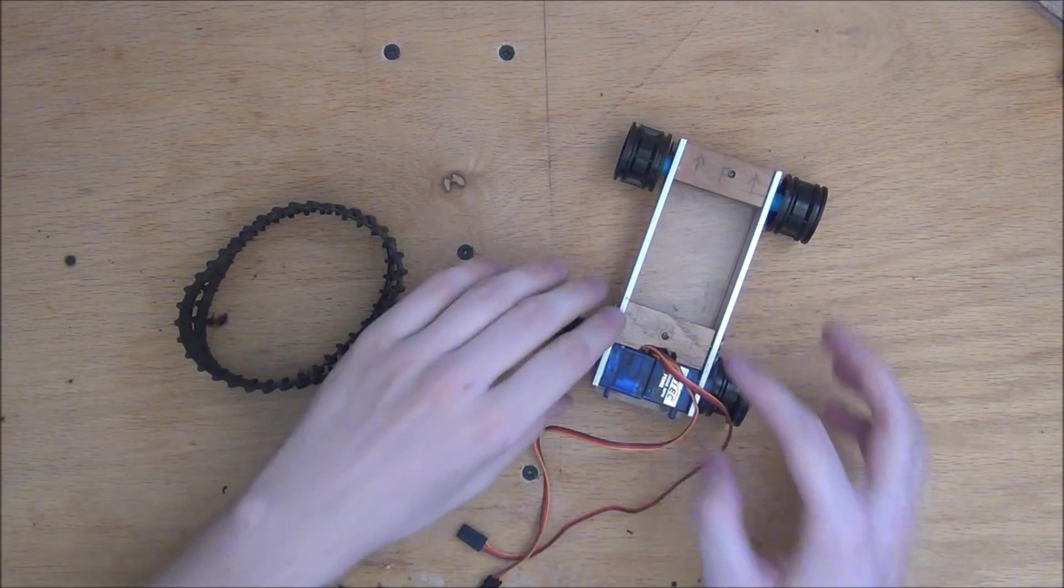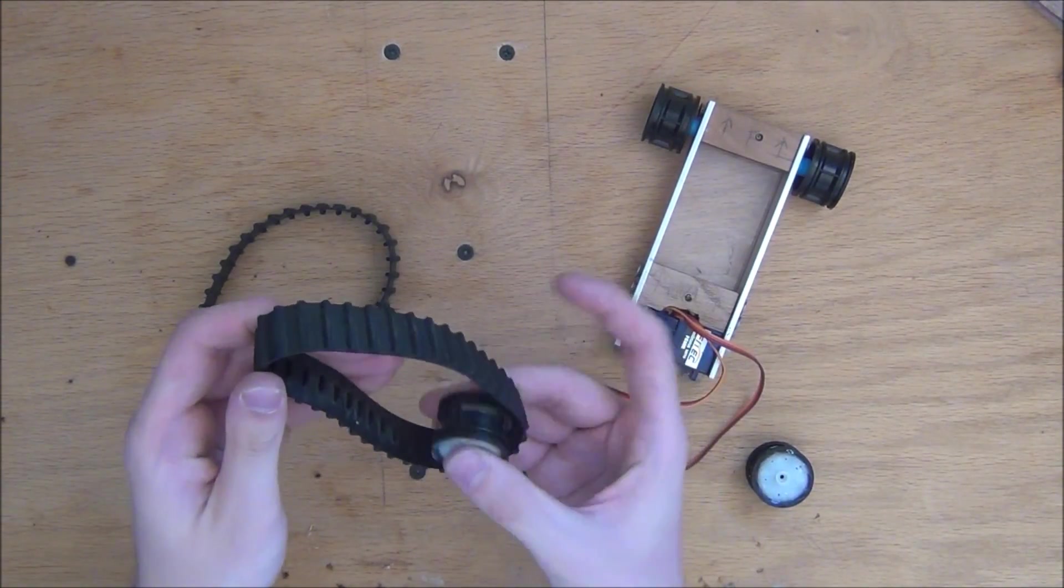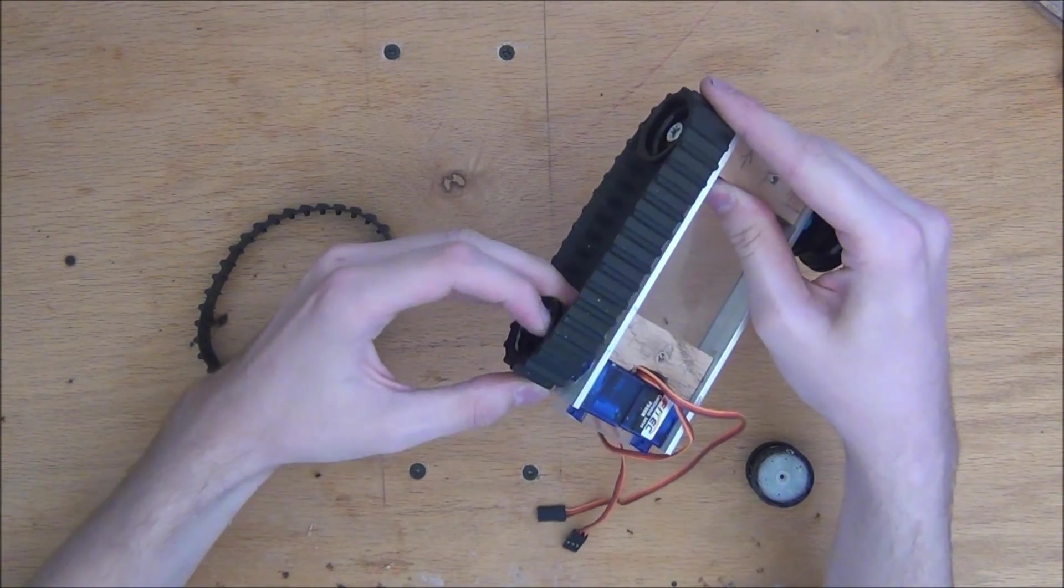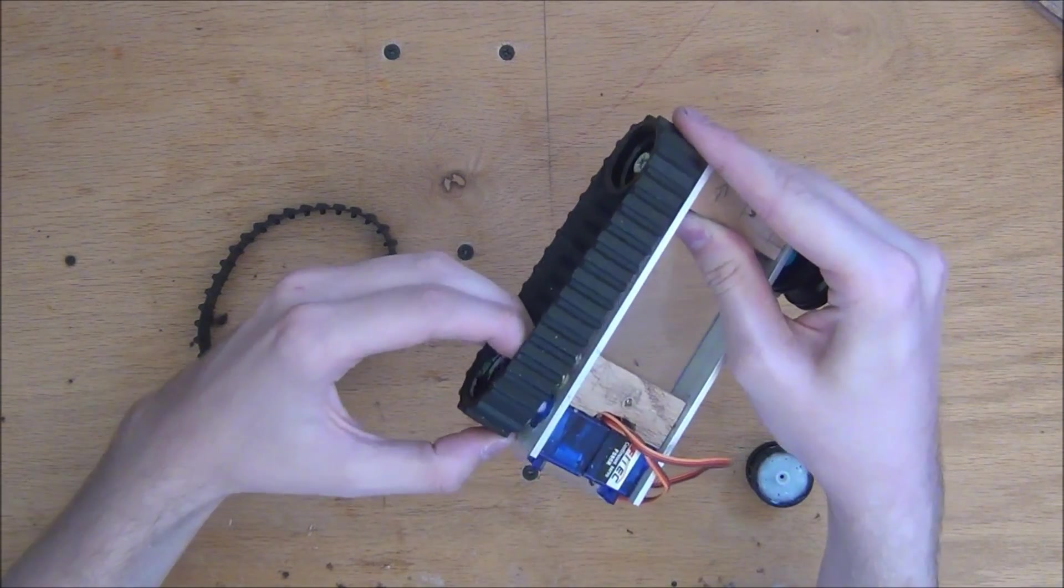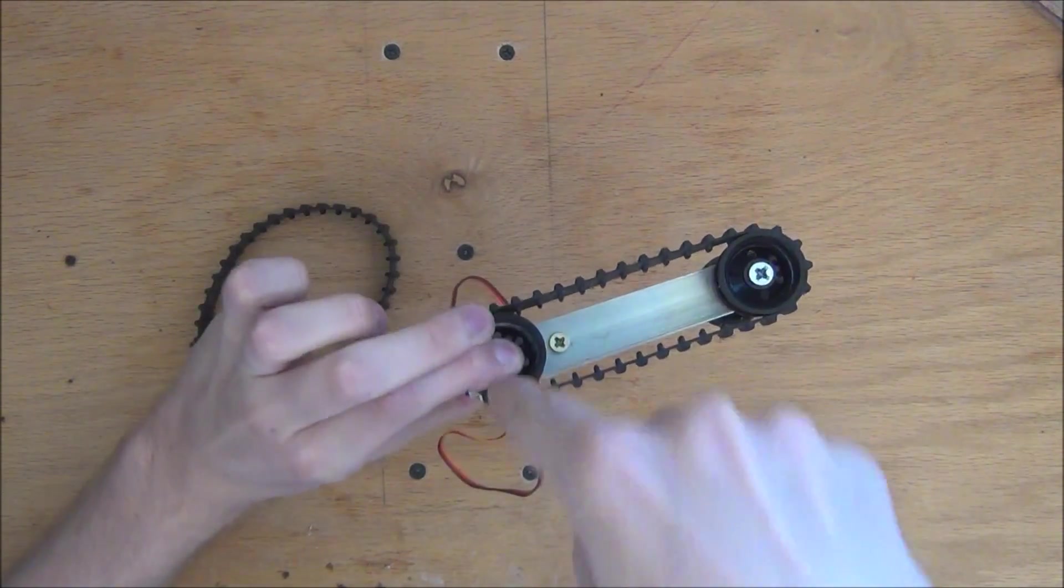So to put on the treads, what we'll want to do is take off both back wheels, put the back wheel in the tread, connect the tread to the front wheel, and then pull it back and mount it on the servo motor. Just like that. Now once that's done, go ahead and screw it in place.